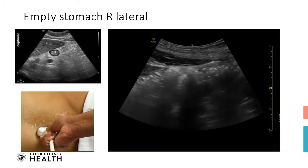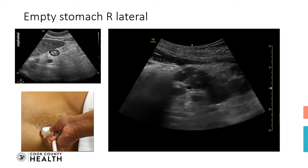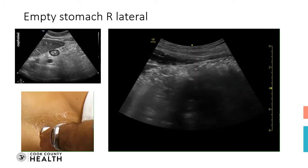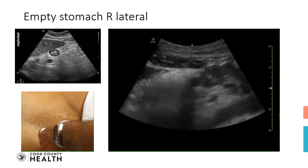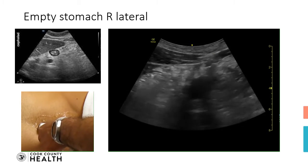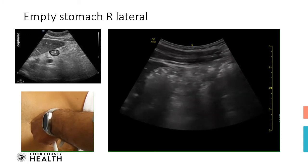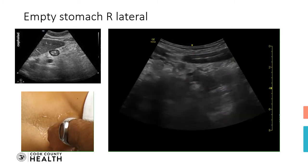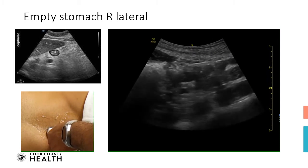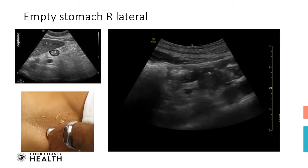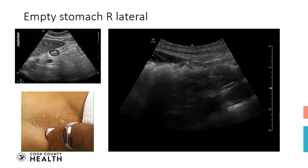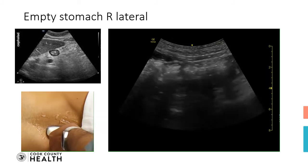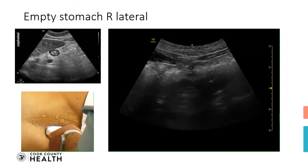Other structures you can see include the aorta, the IVC, and the pancreas. To see the aorta, you scan the probe a little bit lateral, towards the left side. There we are — we can see the aorta, which is a pulsating structure. You can also see the superior mesenteric artery, which is a branch of the aorta. And then again you can visualize the antrum. The pancreas will be posterior to the antrum.